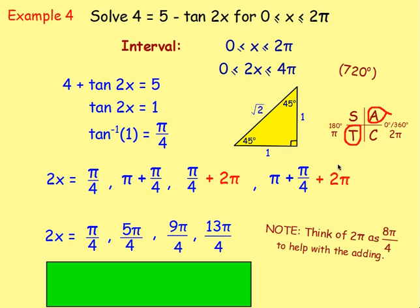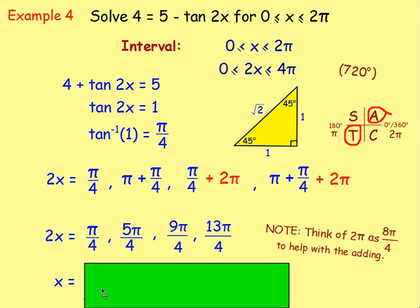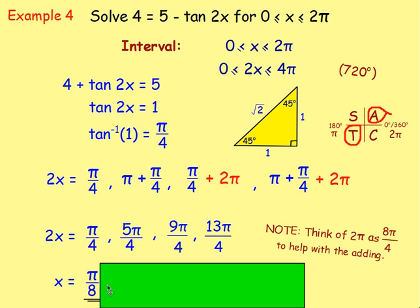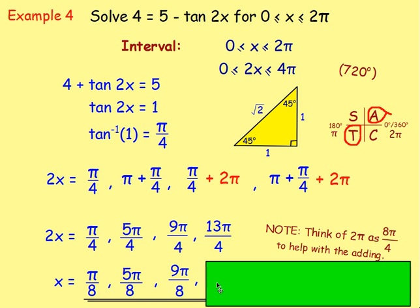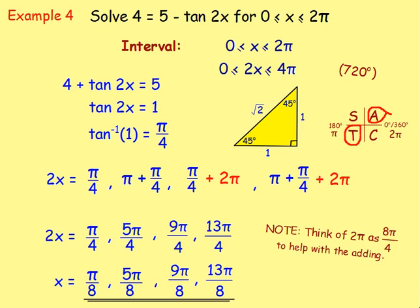So 2x equals π over 4, 5π over 4, 9π over 4, and 13π over 4. To get x, divide everything by 2 — dividing a quarter by 2 gives an eighth. So x equals π over 8, 5π over 8, 9π over 8, and 13π over 8.